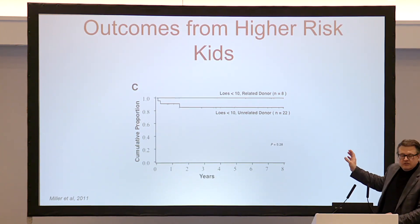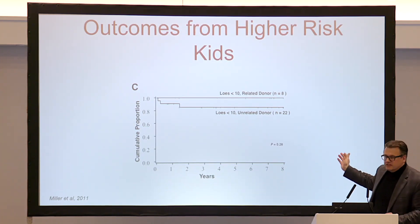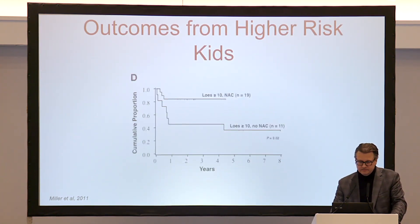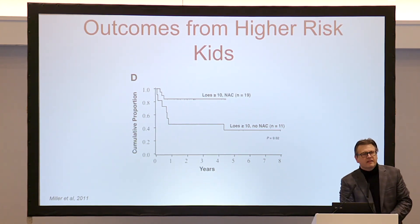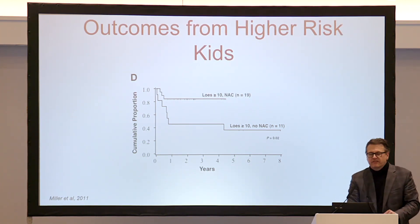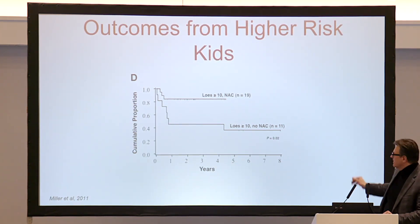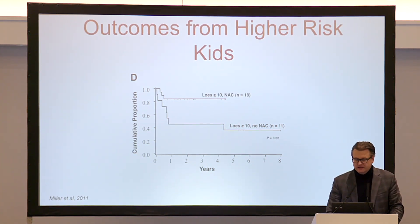Looking at Loes scores less than 10 using a related donor — a sibling — survival in this cohort was 100%. With an unrelated donor you take a step down. We also use N-acetylcysteine, a potent antioxidant, for boys with Loes scores of 10 or higher. N-acetylcysteine does provide some survival benefit; we're not exactly sure of the mechanism, but probably something to do with its anti-inflammatory and antioxidant abilities.